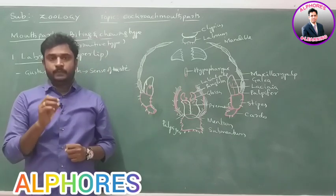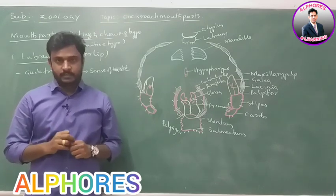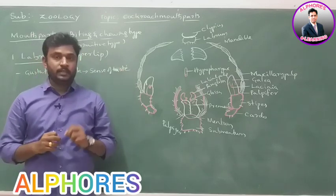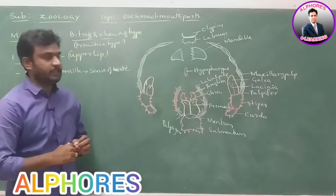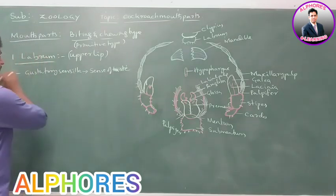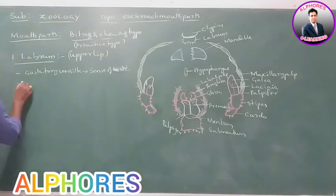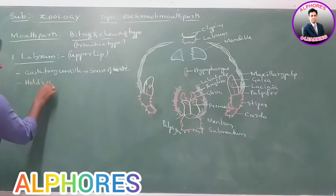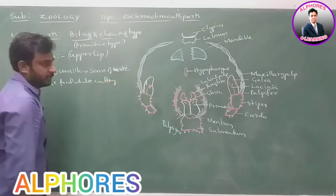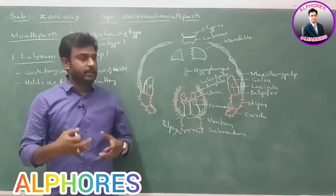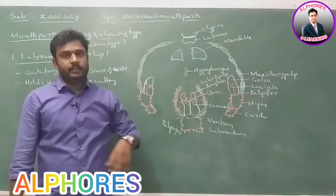We taste food with the help of papillae present on the tongue. In the cockroach, labrum consists of sensory papillae like gustatory sensilla, which are useful for the tasting of food materials located on the labrum, also called the upper lip. It also holds the food materials while cutting — that is the function of labrum.